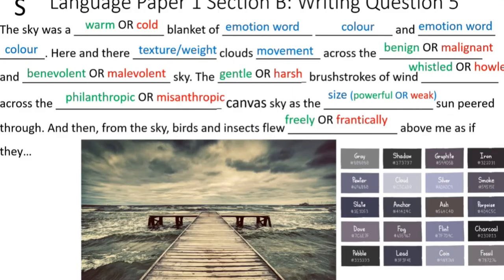Now use this paragraph structure with the emotion words you wrote and the shades of blue or grey from this diagram. The idea is to keep the mood the same. Notice the metaphor of brush strokes and canvas being used for early marks. This is something you can do directly in your exam. So pause the video now and write up your first paragraph.